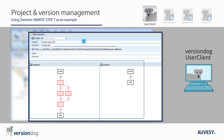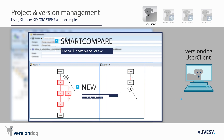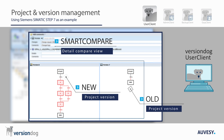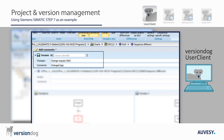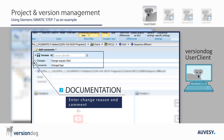First, the Smart Compare automatically compares the new project version with the previous version, and the differences between the new and old version are juxtaposed for comparison. Projects often involve more than one person, so it is important that who changed what, where, when, and why is always clear to help facilitate documenting changes made to a project.